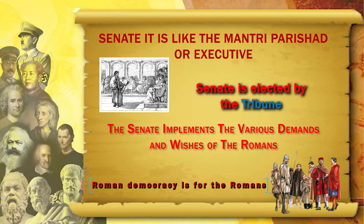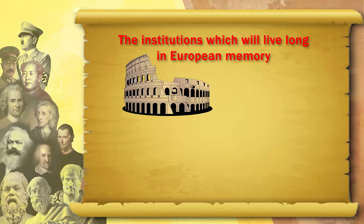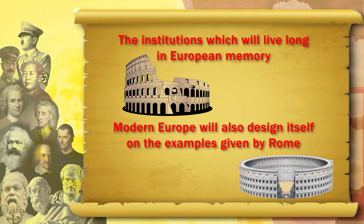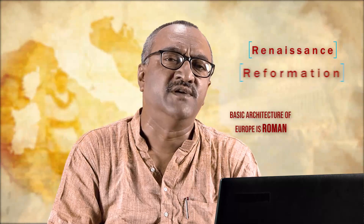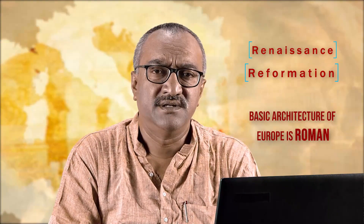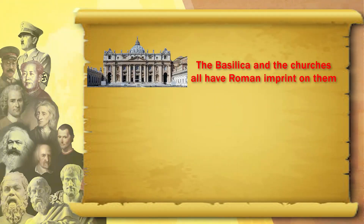Roman democracy was for Romans — the citizens of Rome. Very rarely do we find that the institutions of senate, congress, and tribune were duplicated in other Roman cities; they existed in Alexandria and Lydia, but not throughout the entire Roman Empire. After the Renaissance and Reformation, the basic architecture of Europe is Roman. All the modern buildings of Europe — the basilicas and the churches — have a Roman imprint on them.